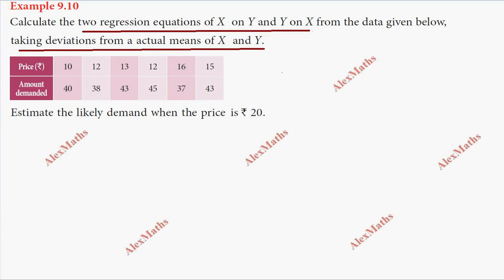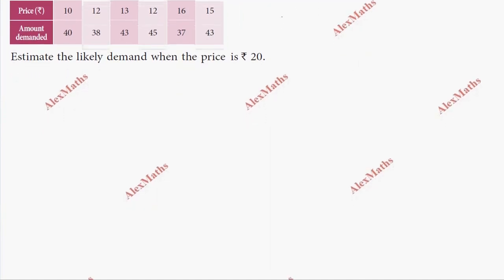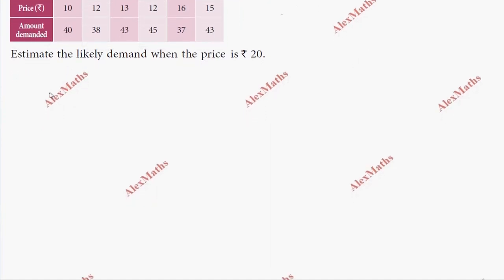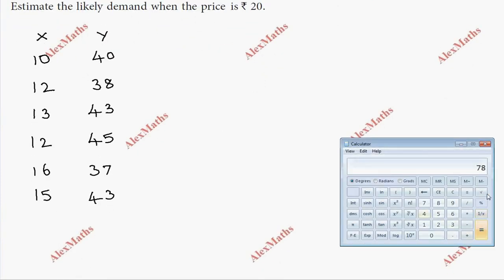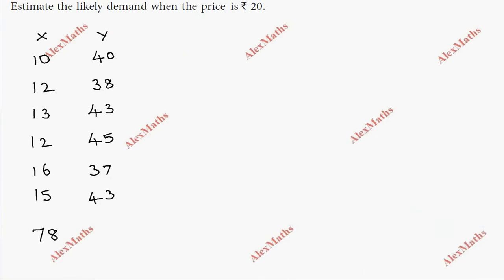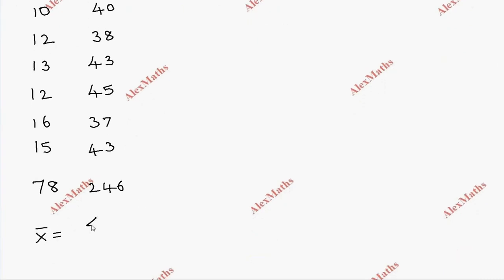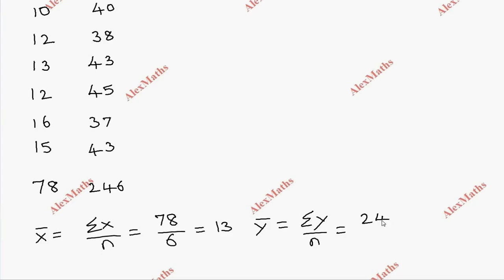So first, the values along the table — x and y, price and amount demanded. The summation of x values is 78 and y values is 246. So x-bar is sigma x by n, that is 78 divided by 6 which equals 13. And y-bar is sigma y by n, so 246 divided by 6 equals 41.